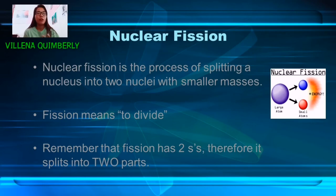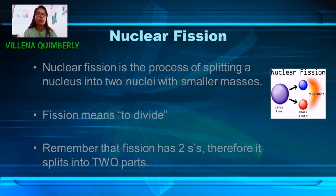Nuclear fission is the process of splitting a nucleus into two nuclei with smaller masses. Fission means to divide. Remember that fission has two S's.